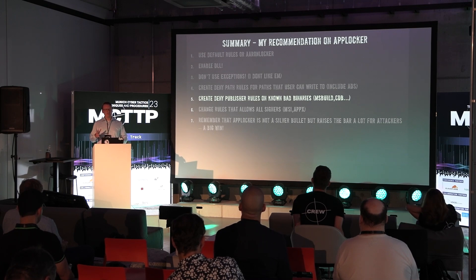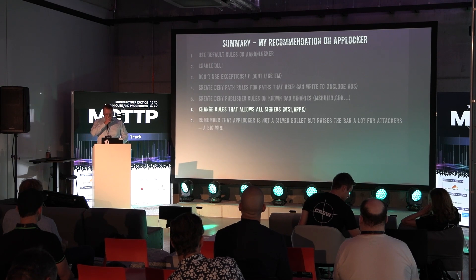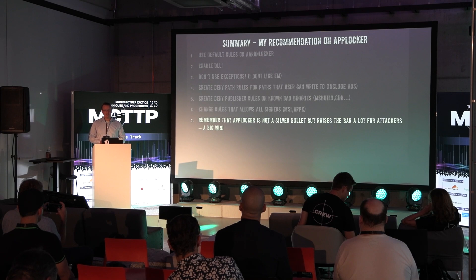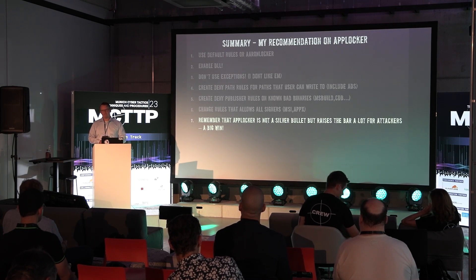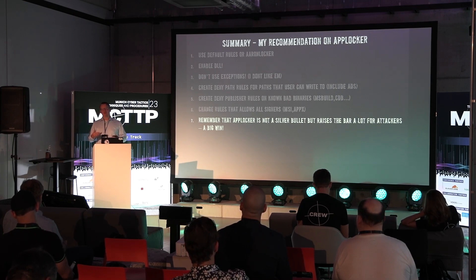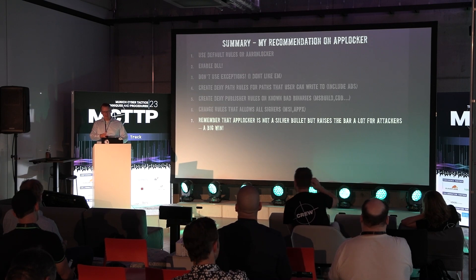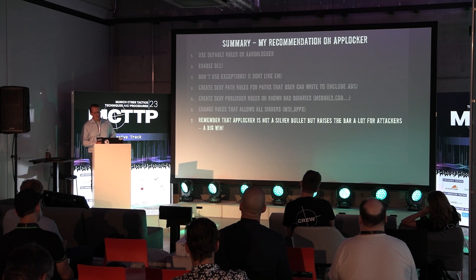Remember that AppLocker is not something that stops everything, but just by creating the default rules and applying them, I'm pretty sure it will stop 70-80% of ransomware attacks right off the bat. It's a low bar to get this going, and it's a big win. And if you collect logs centrally, you get insights into what users try to execute - that's super helpful, and you can even detect some nasty stuff when you start to dig.